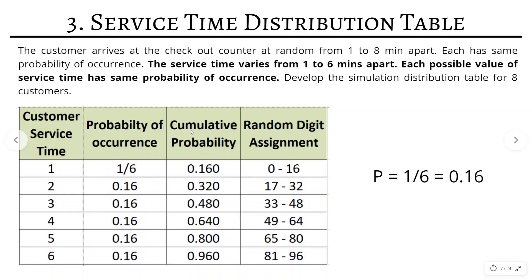We calculate the cumulative probability for the service time table the same way as for the inter-arrival table. For the first row it is 0.160, for the second 0.320, then 0.480, then 0.640, and so on to the last value. For random digit assignment, we start from 0 and assign up to 16 for the first row, then 17–32, then 33–48, then 49–64, then 65–80, and finally 81–96. This completes the service time distribution table.